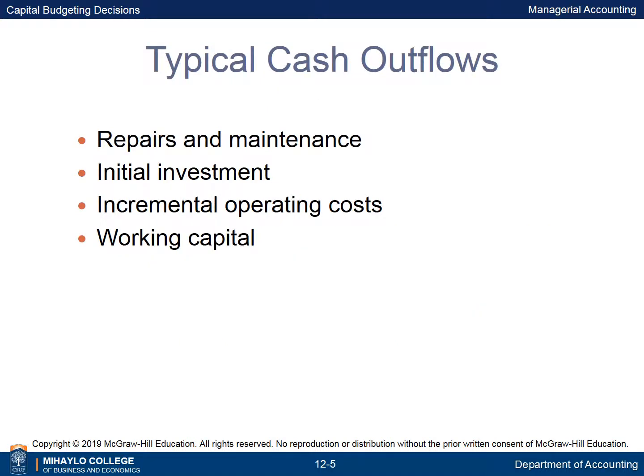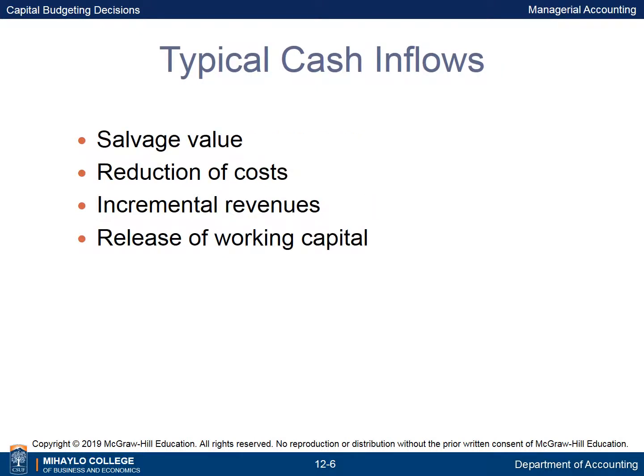Typical cash outflows in a capital budgeting decision include repairs and maintenance, incremental operating costs, the initial investment, and working capital. Typical cash inflows are salvage value, reduction of costs, incremental revenues, and release of working capital.